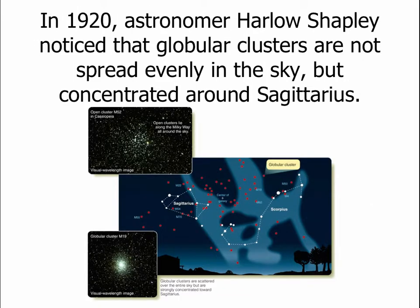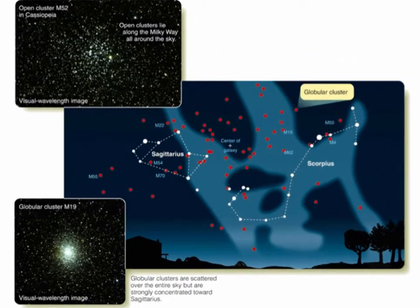Back to our history of the Milky Way. It was in 1920 that an astronomer named Harlow Shapley, a Harvard astronomer, noticed that globular clusters — these really old dense star clusters — are not spread evenly throughout the sky. Open clusters are pretty much equal in every direction along the Milky Way, but globular clusters are a lot more concentrated in the direction of Sagittarius and Scorpius. Shapley reasoned that if the globular clusters are centered around the galactic center, and we are not at the center, we would expect a higher concentration of globulars in the direction of the center — meaning the center of the Milky Way must be in the direction of Sagittarius and Scorpius.